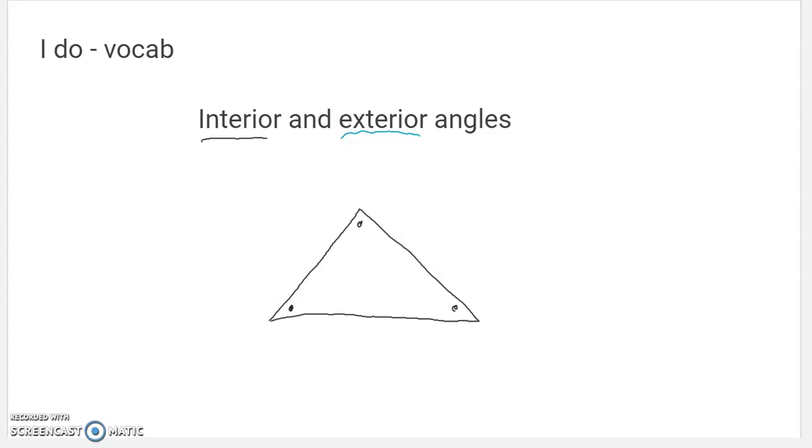Those are called interior angles. They are inside the triangle. Interior means inside. The interior of a house is the inside of the house. The exterior of a house is the outside of a house. And today I want to start talking about the exterior angles of triangles. Here's where those are.